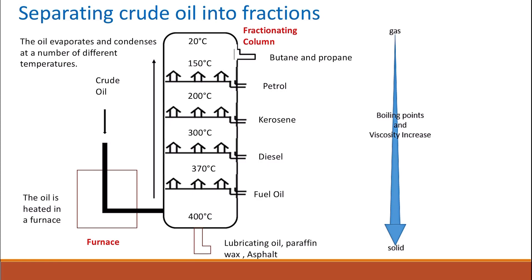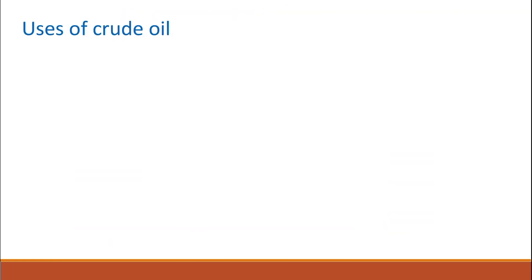The boiling point and viscosity increase as we go down. The fractions can be processed to produce fuel and feedstock for the petrochemical industry. We separate crude oil into different fractions of components that have similar numbers of carbon atoms and similar boiling points, so they can be used to provide fuel.